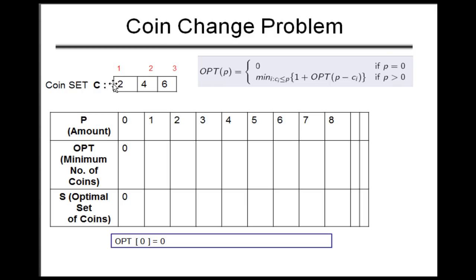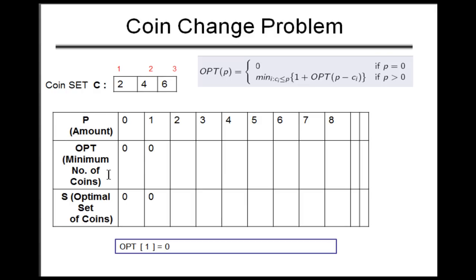For this simulation, the set of coins given is two dollars, four dollars, and six dollars, and you have to make change for eight dollars. There is a base case: when P equals zero, the optimal solution is zero — the minimum number of coins required is zero. For P equals one, it is also zero because the smallest coin is two dollars, so there's no way to make exactly one dollar.